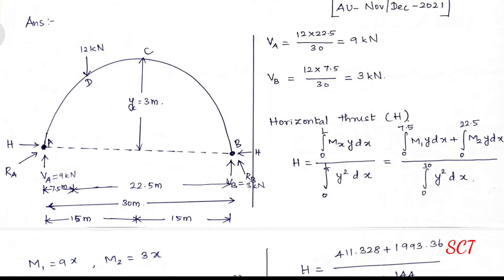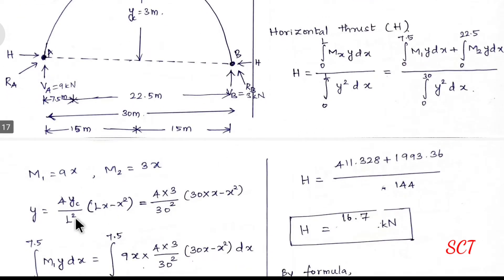Now, we are told there is a horizontal thrust in two-hinged arches. There is no hinge in the center here, so we cannot use sum of Mc equals zero directly. So how do we use this formula? H is equal to the integral from 0 to L of Mx times yx dx, divided by the integral of y squared dx.